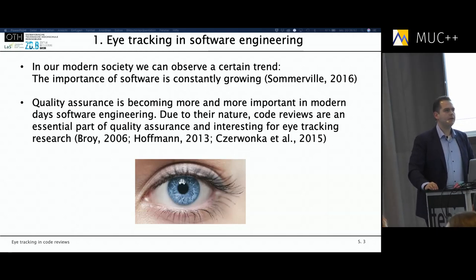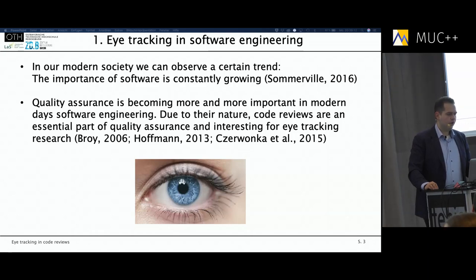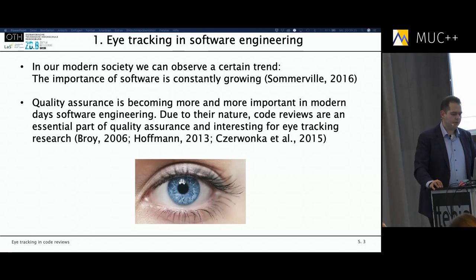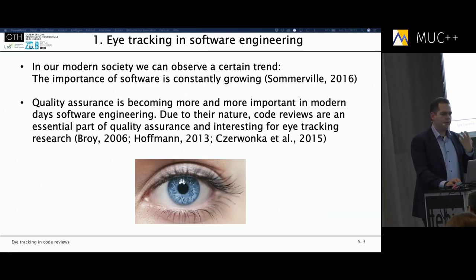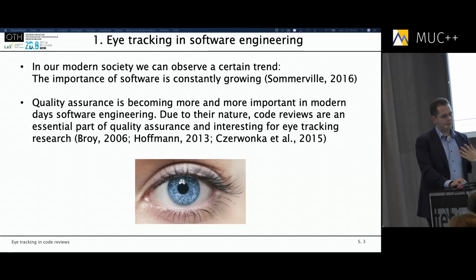This trend — that software is getting more important in our daily life — will continue, especially with developments like the autonomous driving car. Somerville also mentioned in his standard work that our modern society would probably collapse without the use of software, because most of our infrastructure is already controlled by software. For this reason, we have a high need for software which is on a very high qualitative level, and quality assurance is getting more and more important.